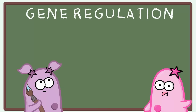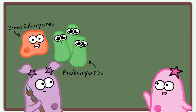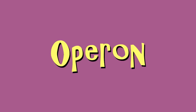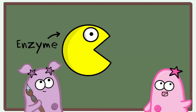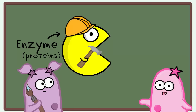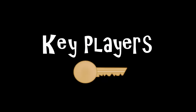Now we want to shift gears to talk about a very interesting way of regulating genes that can be sometimes a little challenging to visualize. This particular method is really found in prokaryotes, with a few eukaryote exceptions. It's called an operon. An operon is a fancy way of regulating genes, and it's usually made up of a few genes that can involve enzymes. Remember that enzymes are proteins with the ability to break down or build up the substances that they act on.